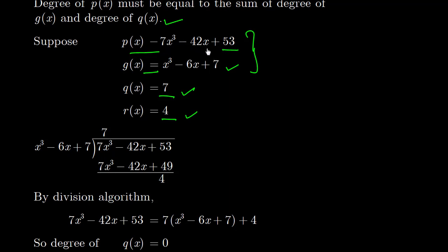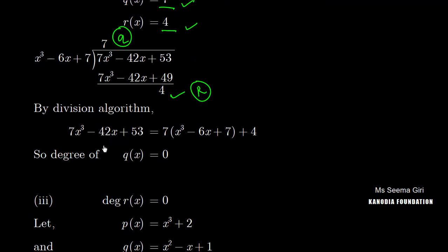We take P(x) = 7x³ - 42x + 53 and G(x) = x³ - 6x + 7. Both have the same degree. Dividing: 7 × x³ gives 7x³; 7 × 6 = 42, 7 × 7 = 49. Our remainder comes out to 4. So degree of the remainder equals degree of the quotient — both are 0. By the division algorithm, 7x³ - 42x + 53 = 7·(x³ - 6x + 7) + 4. Therefore, degree of the quotient = 0.